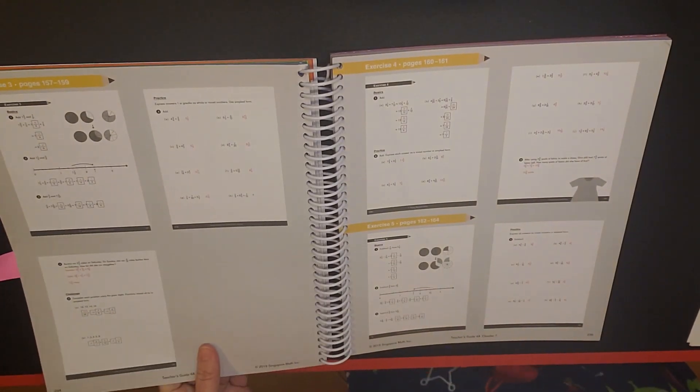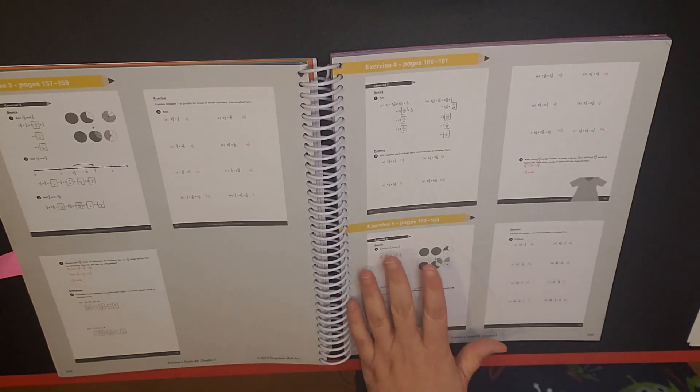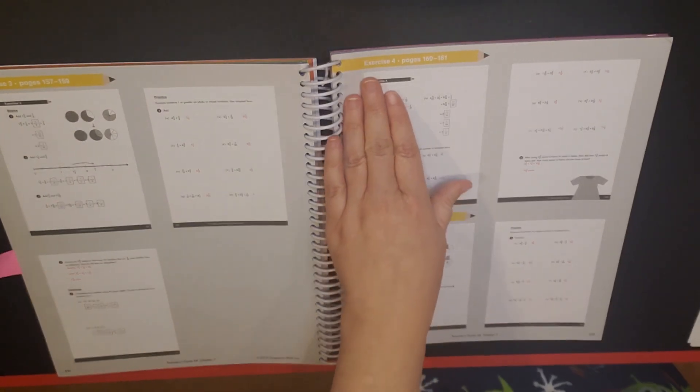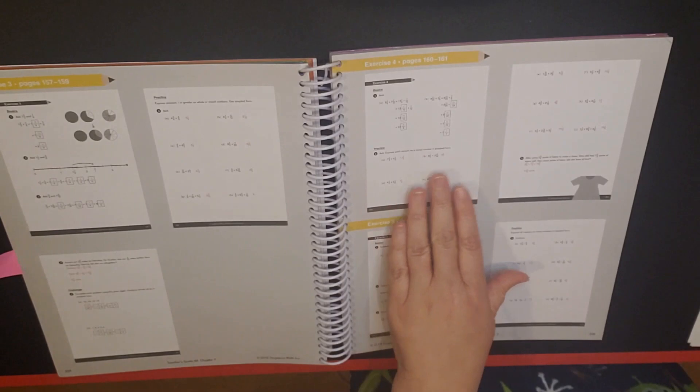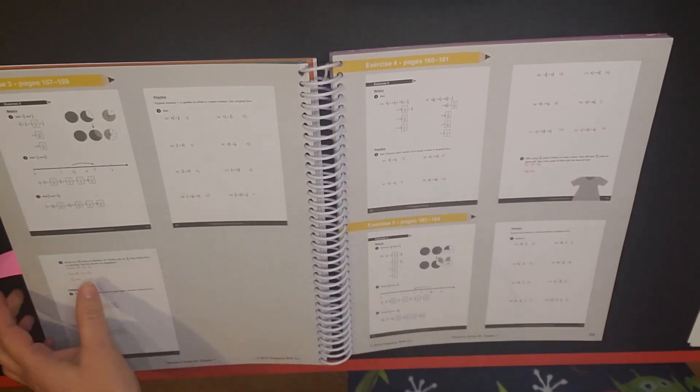So the exercise would be in your student workbook, which is the black and white version workbook. And it gives you these are the problems that would be in the workbook as well as you now have the answers for this lesson.